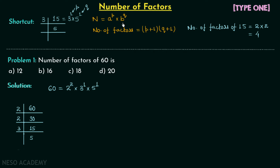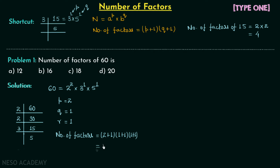Comparing with the standard form, p = 2, q = 1, and r = 1. The total number of factors = (p + 1) × (q + 1) × (r + 1) = 3 × 2 × 2 = 12. So number 60 has 12 factors in total. This shows how the shortcut method saves a lot of time.